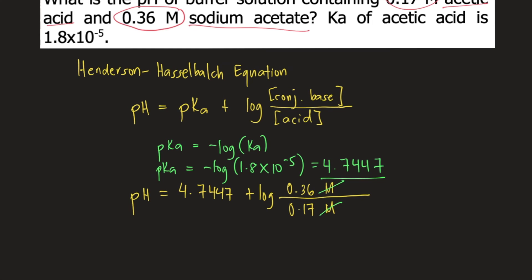That is equal to 2.1176. So you get the log of that plus 4.7447, and that is the pH of the buffer solution.